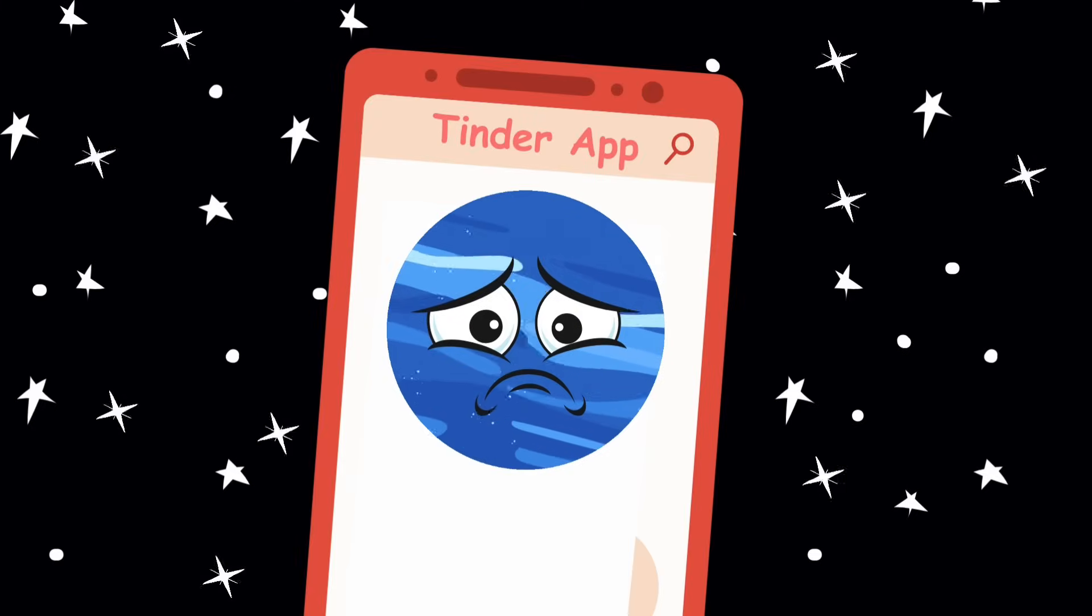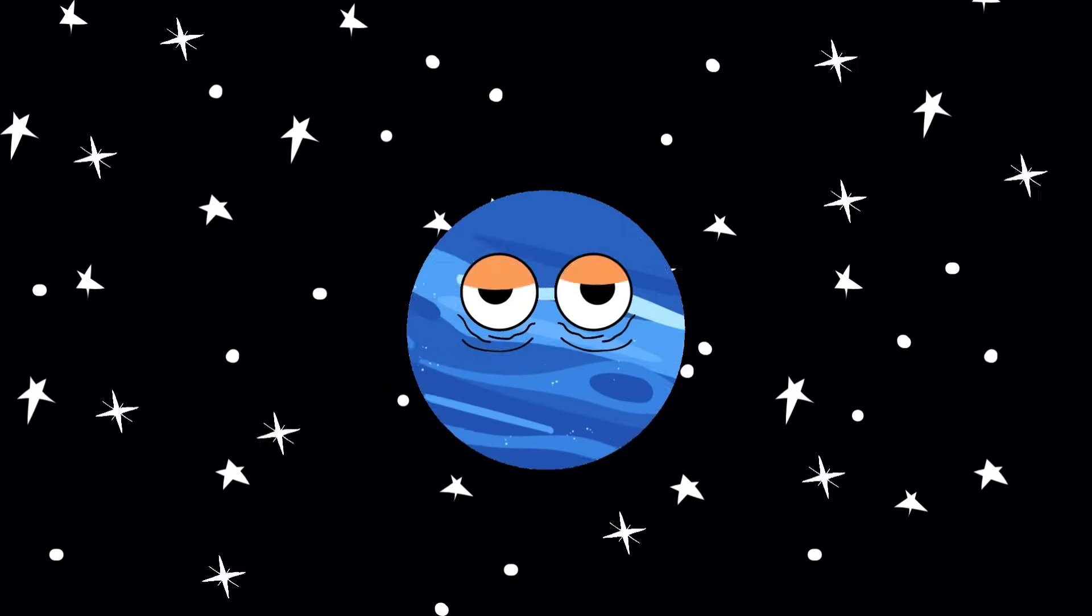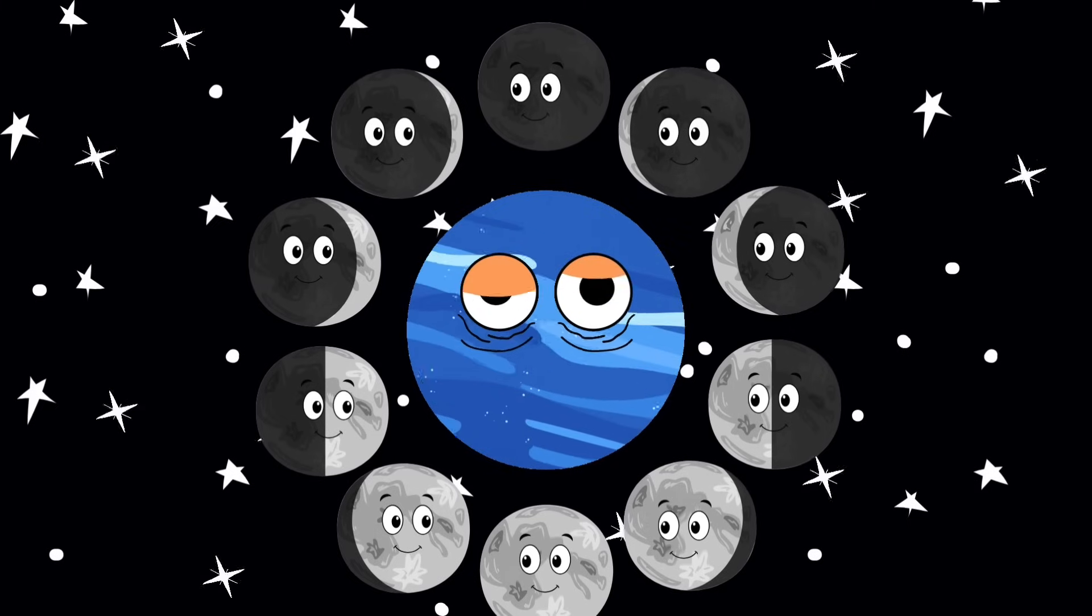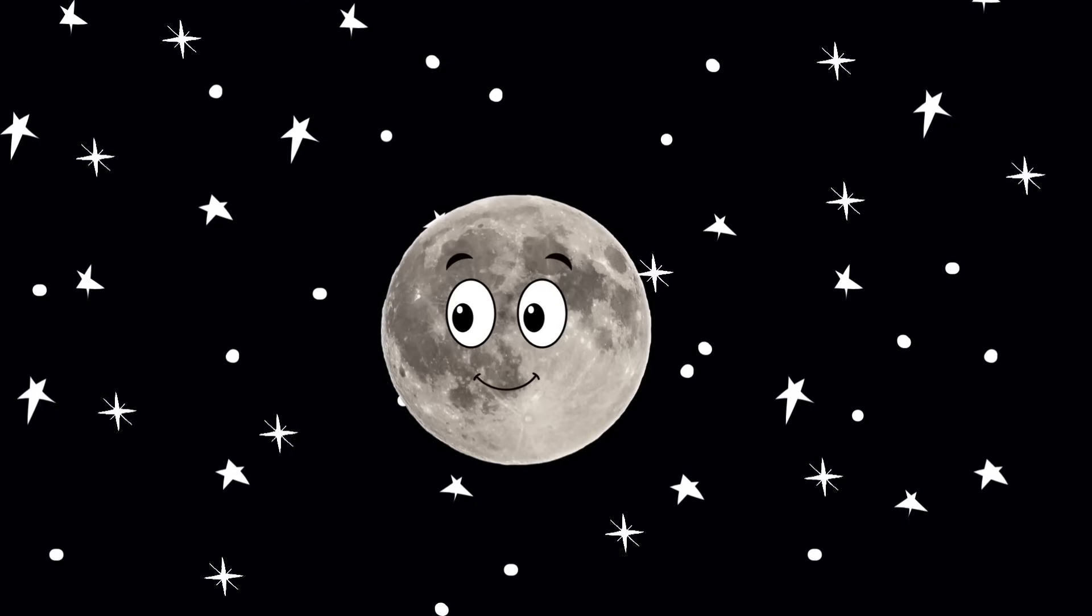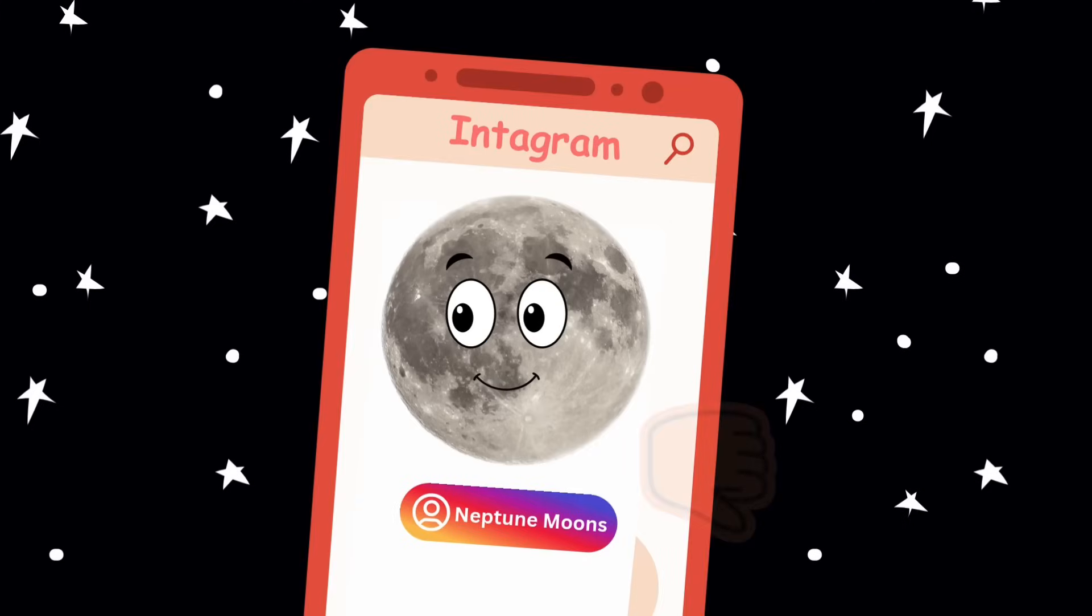Neptune's the tinder match that you ghosted because the profile didn't load fast enough. Neptune has 14 moons. 14! You'd think that'd make it the cool kid, right? But none of Neptune's moons are Instagram famous. Not one!